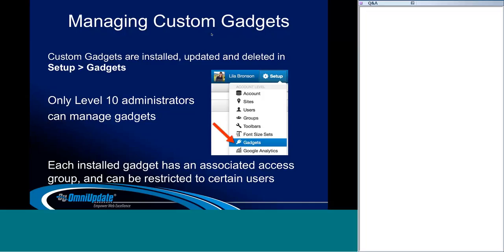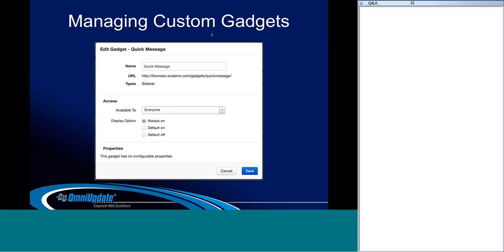Each gadget has an associated access group, and you can restrict access to certain gadgets to particular groups of users. By default, if no group is selected, only administrators will have access. When you hit Edit, you can edit the gadget name, see the URL and types, set access groups, and change display settings — whether the gadget is always on, default on but users can turn it off, or default off. If the gadget has configurable properties set up in the config file, they'll appear here. You can also refresh the config.xml file from the same area.